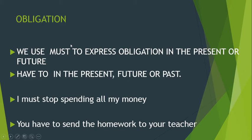So the first one is obligation. We use 'must' to express obligation in the present or future, and we use 'have to' in the present, future, or in the past. For example: 'I must stop spending all my money' — debo de dejar de gastar todo mi dinero. And we use 'have to' for future or past: 'You have to send the homework to your teacher' — tú tienes que enviar tu tarea a tu maestro. This is about the modals of obligation: must and have to.